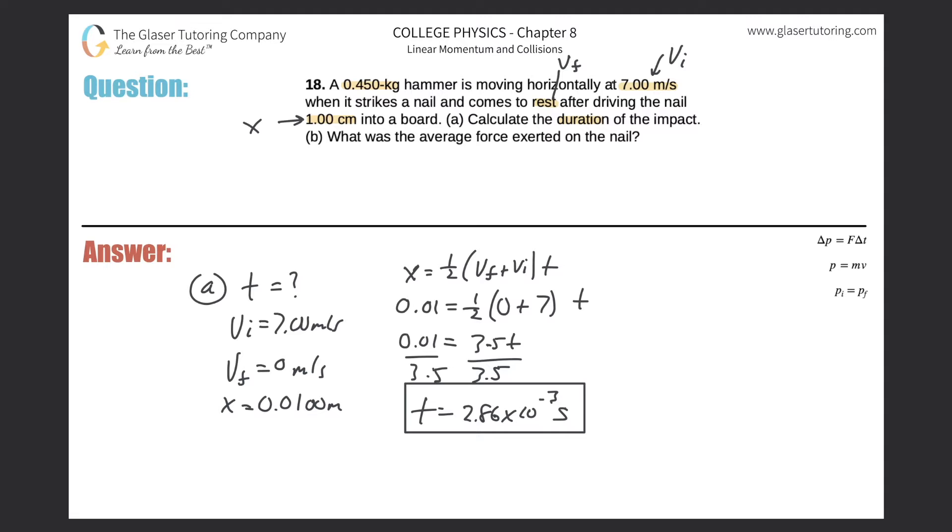Now let's take a look at letter B. It says what is the average force exerted on the nail? So I'm thinking about force, I'm thinking about time. I know there's also a change in momentum here because the object, they told us the mass and it had a change in velocity.